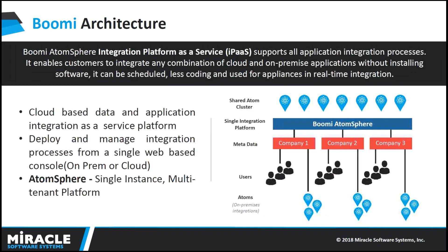Dell Boomi does different types of application integration. It can be done from cloud to cloud, cloud to on-prem, and on-prem to on-prem. You can use the on-prem atom — users can log into Boomi AtomSphere and deploy processes to an on-prem atom or a cloud atom. If you have a lot of databases and on-prem services, choose an on-prem atom. If you have cloud services and web-based applications, then choose cloud-based integration.